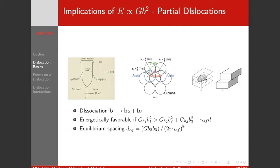So what are the implications of the strain energy being proportional to GB²? Well, the big one is partial dislocations. Dislocations, perfect dislocations don't always stay around. So here we have in an FCC crystal our 110 type dislocation, and it can dissociate into two 112 type partials.